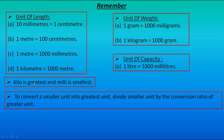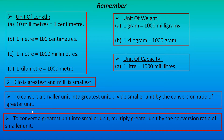And to convert a greater unit into a smaller unit, multiply the greater unit by the conversion ratio of the smaller unit. If you have a value in a greater unit, say kilometers, and you have to convert it into meters, you multiply the kilometers by the conversion ratio of the smaller unit. Here the conversion ratio is 1000, so you multiply the value in kilometers by 1000 to convert it into meters.